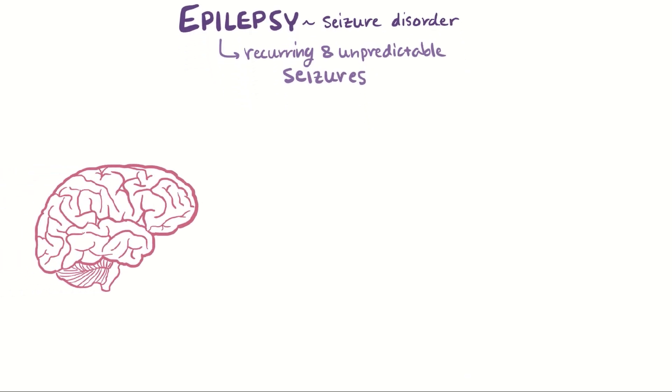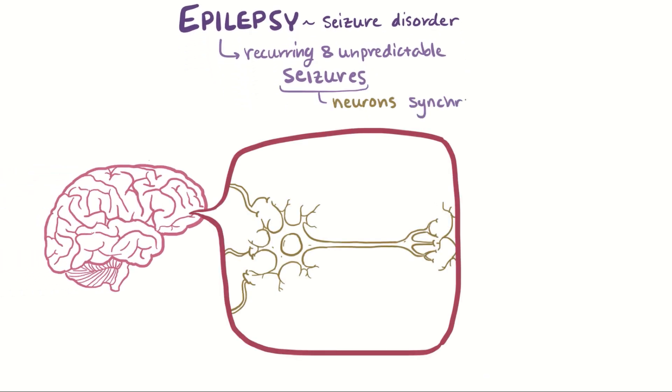A seizure is a period where cells in the brain, or neurons, are synchronously active, or active at the same time, when they're not supposed to be.